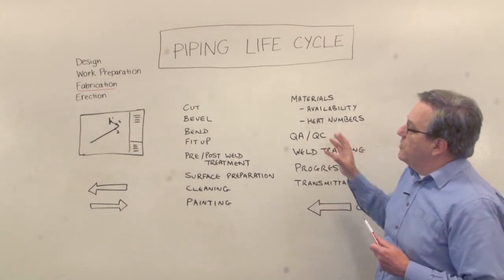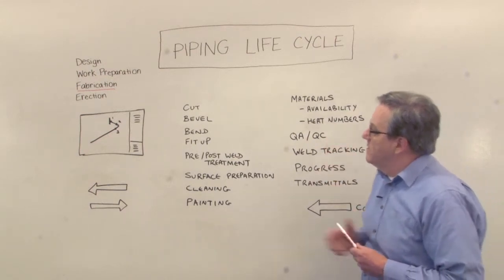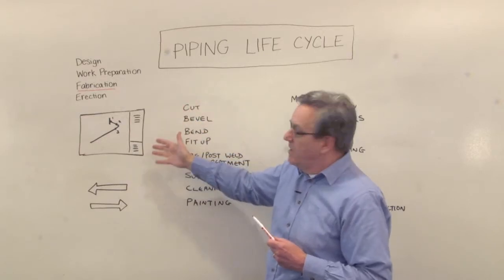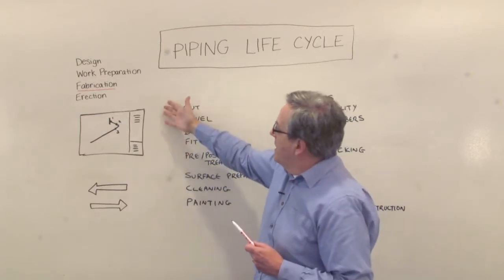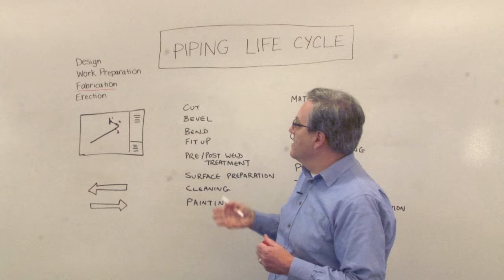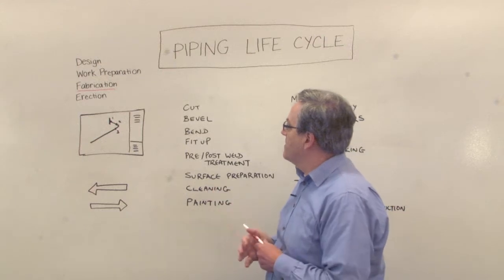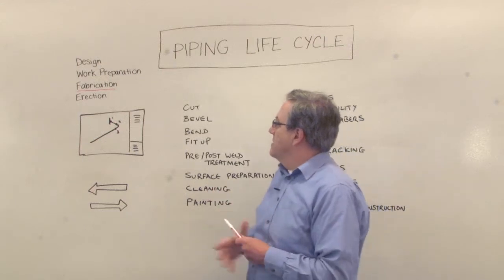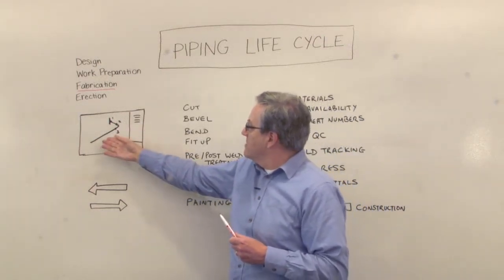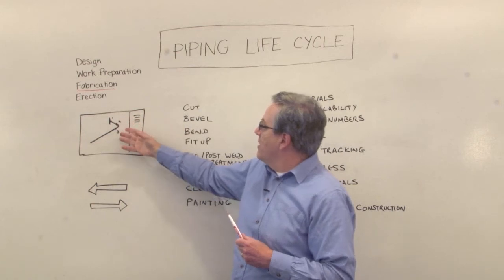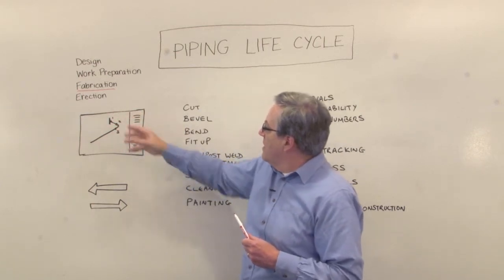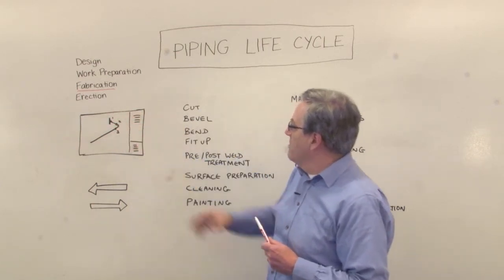Here we have a typical spool drawing, and as you can see, it's a pretty typical pipe spool. It's got a section of pipe, an elbow, a flange, and a number of welds.